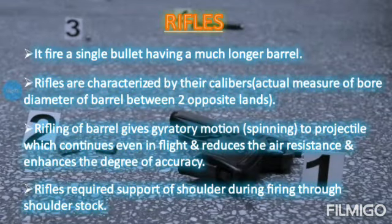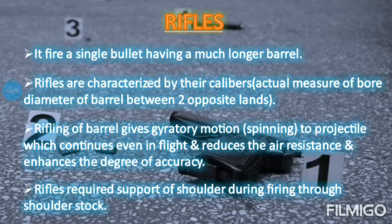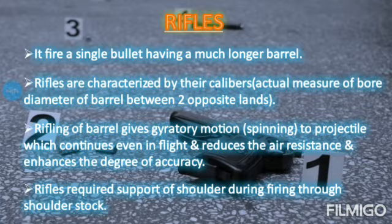Rifles fire a single bullet and have a much longer barrel. Rifles are characterized by their calibers — the actual measure of the bore, which is the diameter of the barrel between two opposite lands.